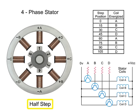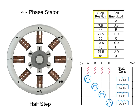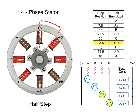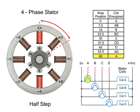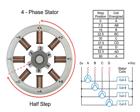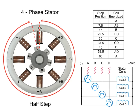For half-step mode, the stepper motor's resolution can be doubled by altering the switching of coils. Half-stepping occurs when one winding is energized and then two windings are energized alternately, causing the rotor to rotate at half the distance. Switching coils in this combination will rotate in the reverse direction. As you can see in this example, 48 steps are required to make a full rotation at 7.5-degree increments.